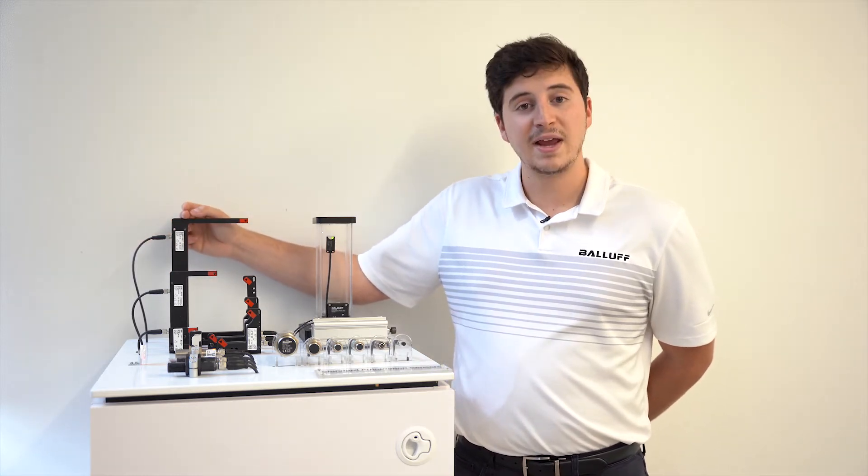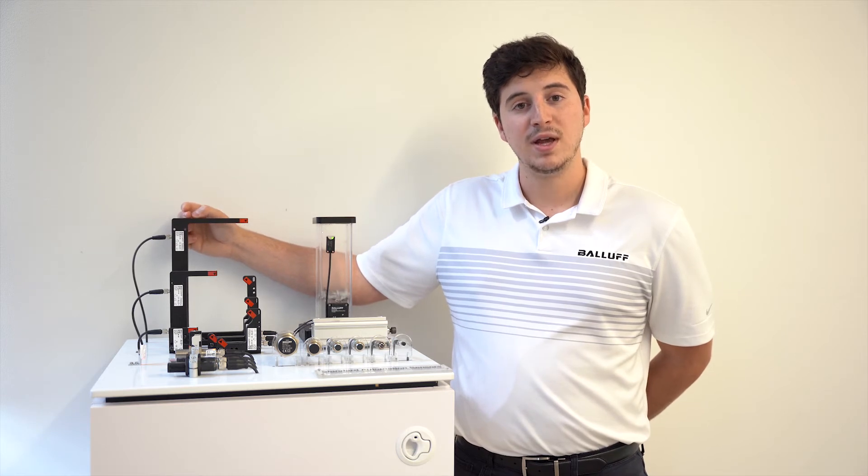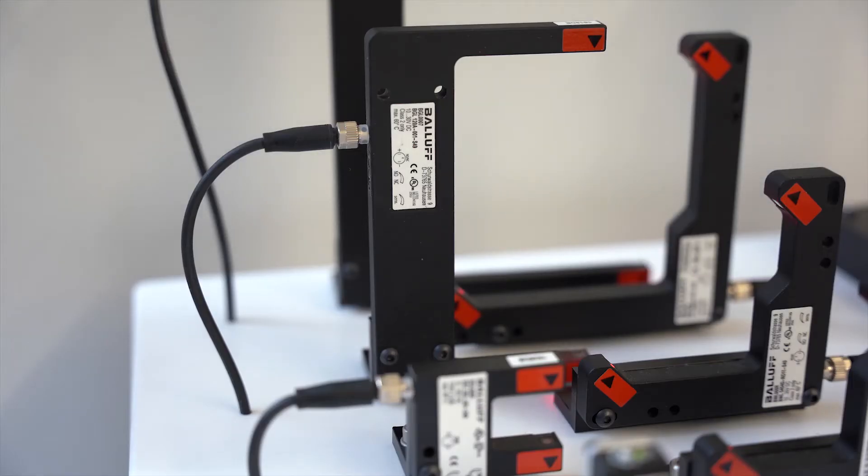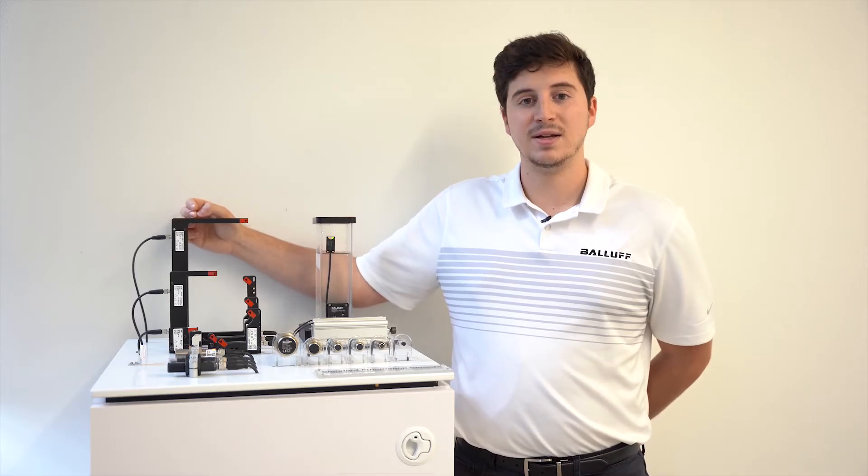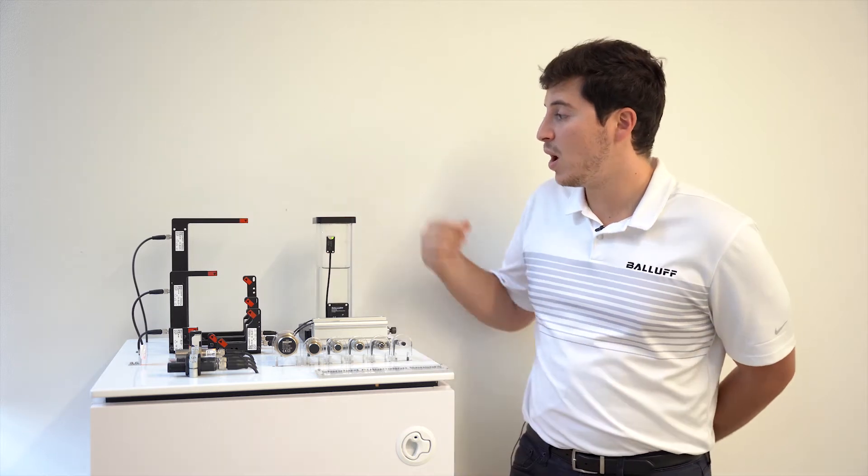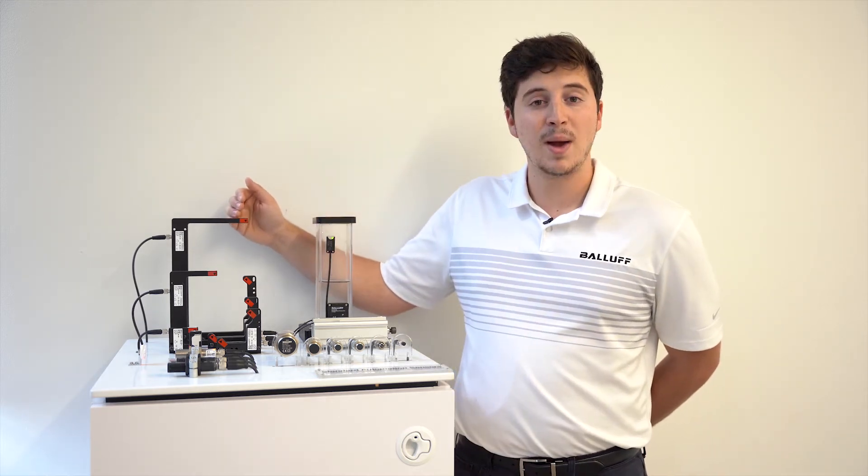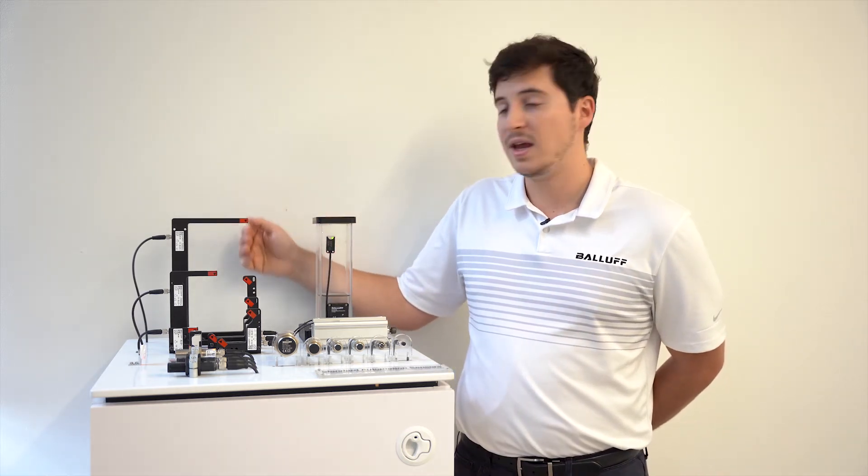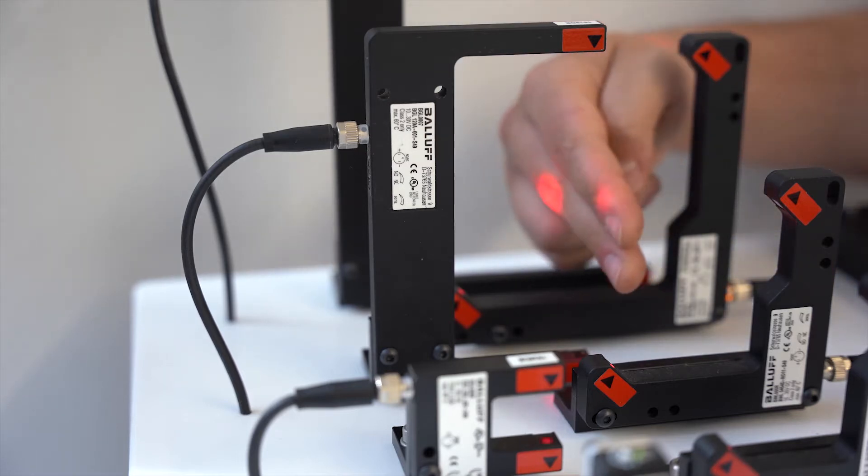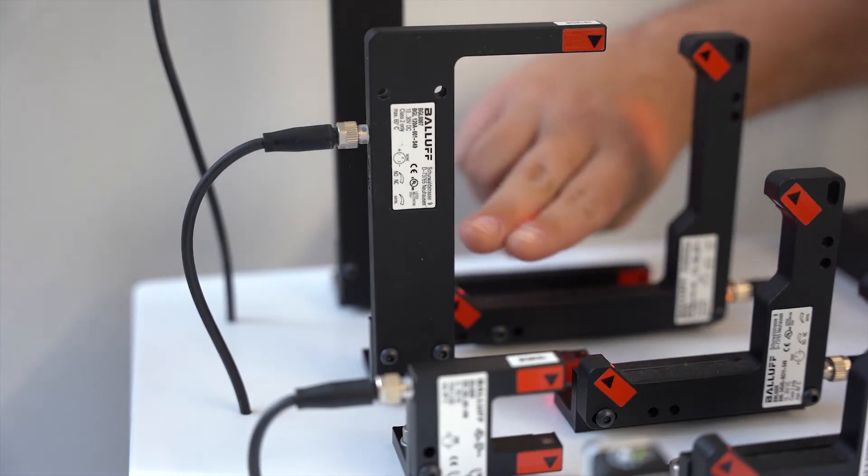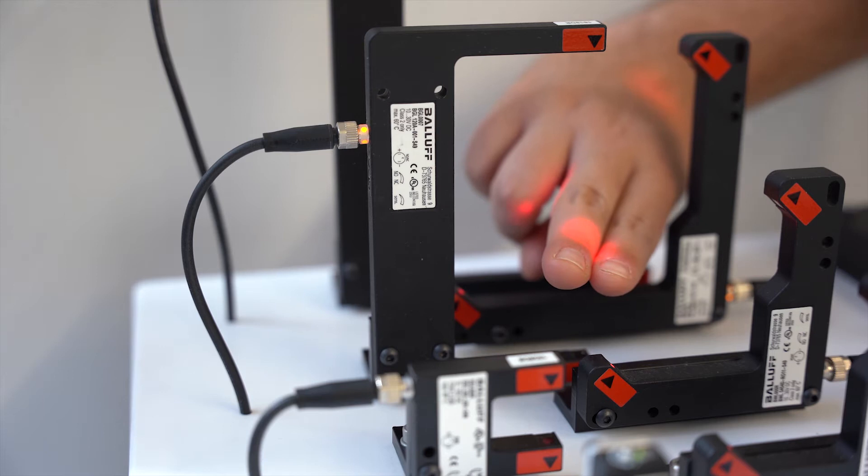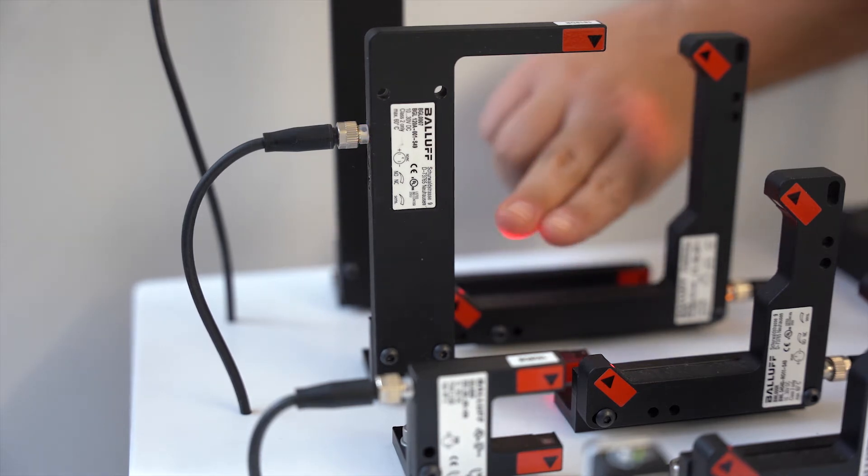When it comes to accuracy, small part detection, detail detection, as well as operating reliability, Ballif fork sensors are top of the line. They operate on a light beam emitted and received, so as a part passes through that light beam, it will trigger the orange output light located near the electrical connection.